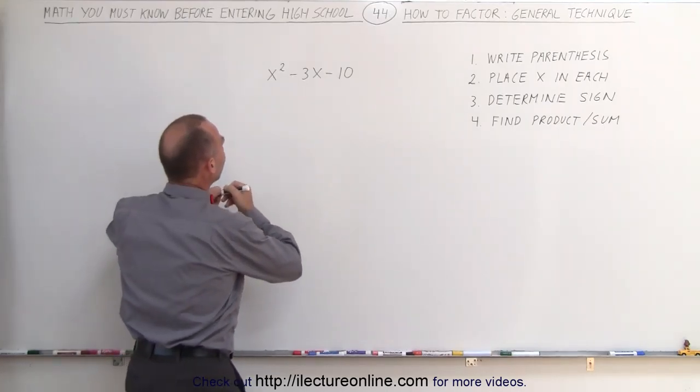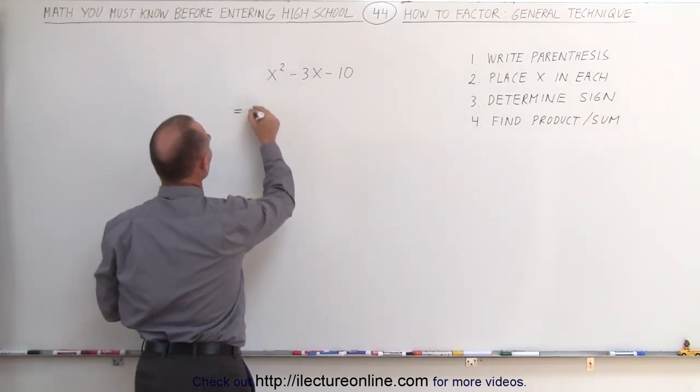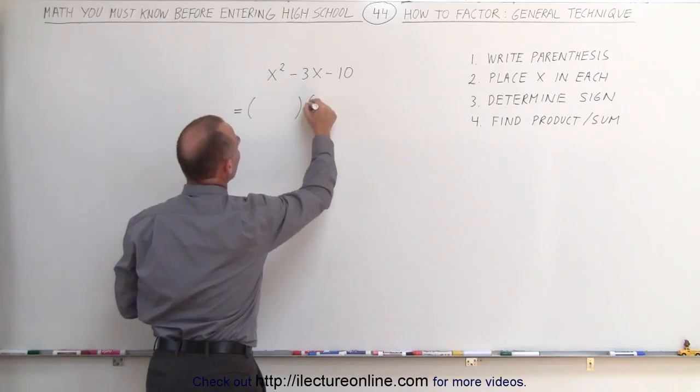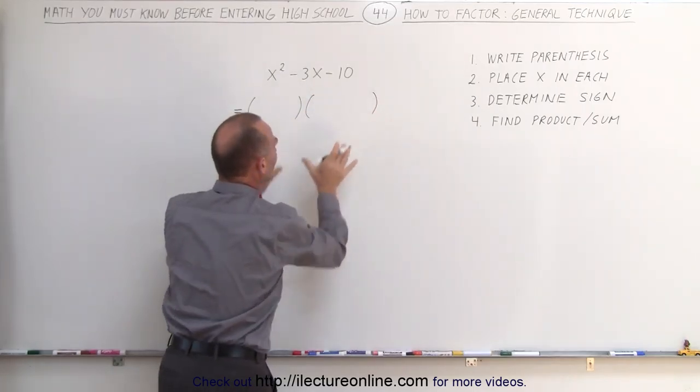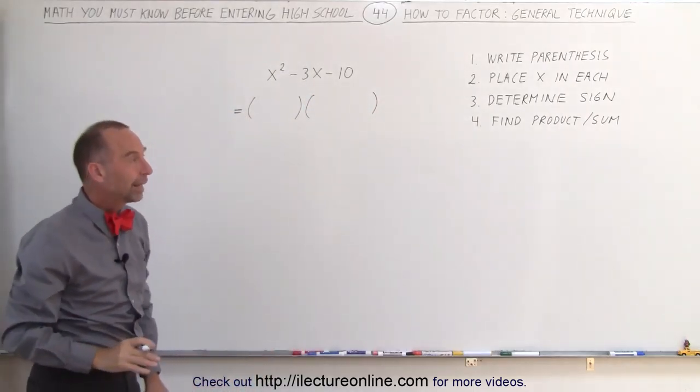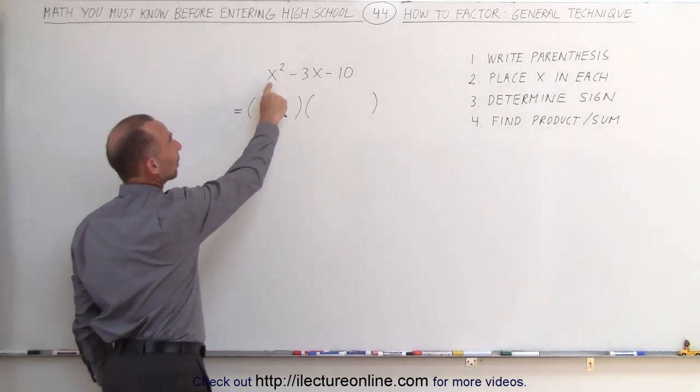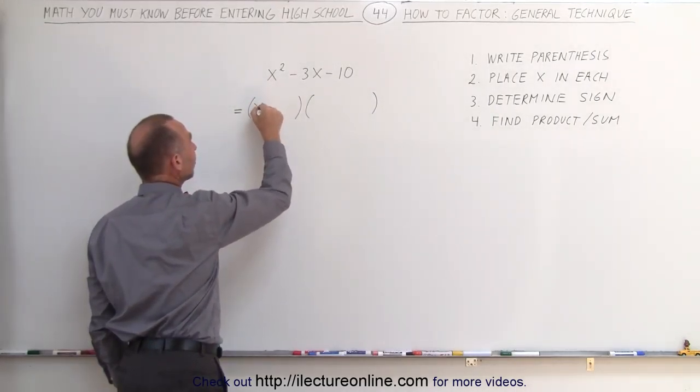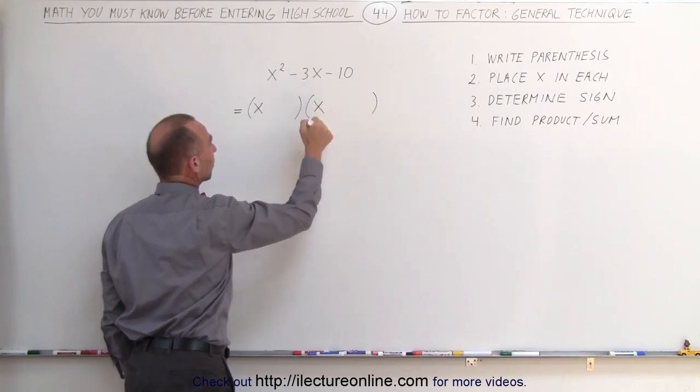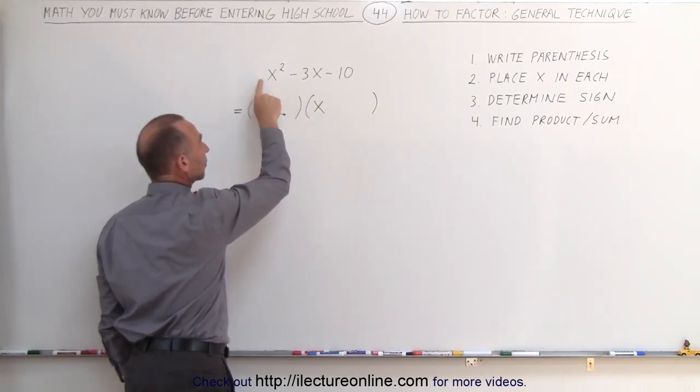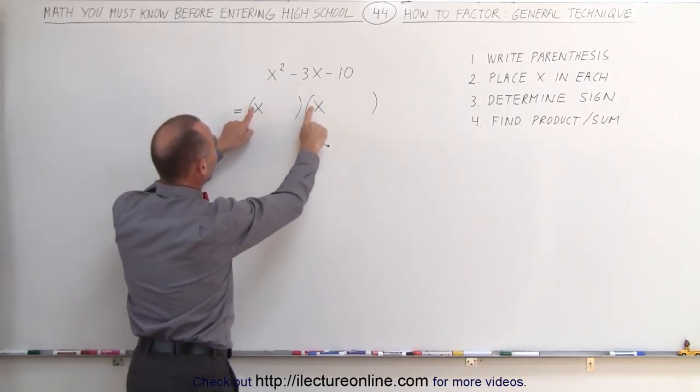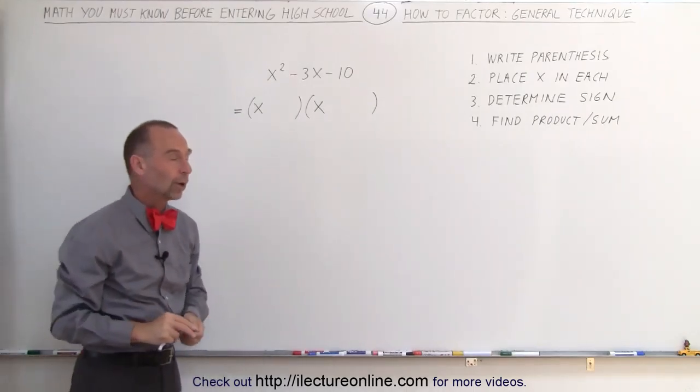So first we're going to write the parentheses. We know that this can be written as a product of two binomials, and therefore you write them within the two parentheses like that. Next, since we have an x-squared here, you can only obtain that if you have an x in this parentheses and an x in that parentheses. Since the number in front of the x-squared is a 1, we don't have to worry about the coefficients over here. They're 1 as well.